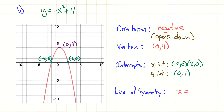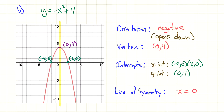And the line of symmetry — looking for the line that cuts this down the middle, I draw it in and notice it crosses the X-axis right at 0. So the line of symmetry is X equals 0. And that's it for this problem.